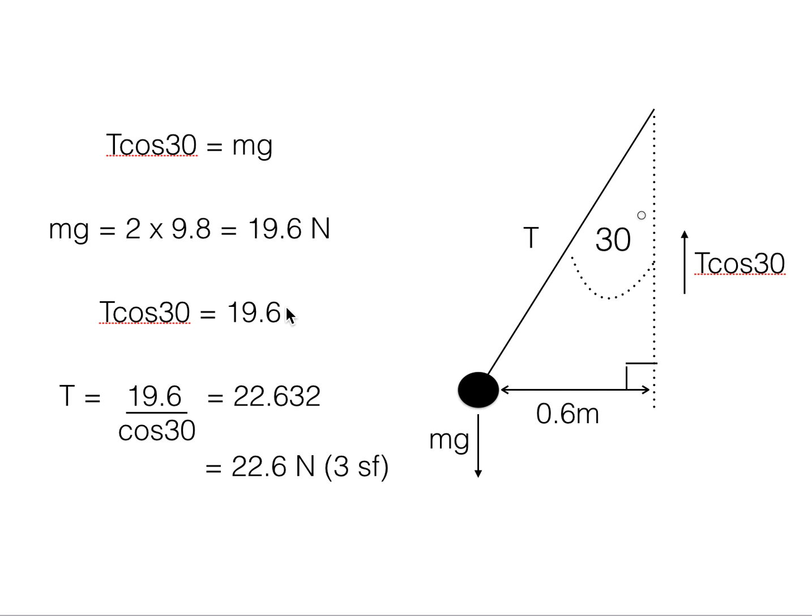And we get this equation, T cos 30 equals 19.6. If we divide both sides by cos 30, we get an equation for T, which we can put into our calculator, and it gives us a value of 22.632, which rounds to three significant figures to 22.6.